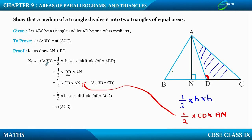So we have proved the result. We got area of triangle ABD equal to area of triangle ACD. That means this median AD divides the triangle into two equal areas.